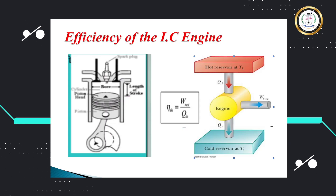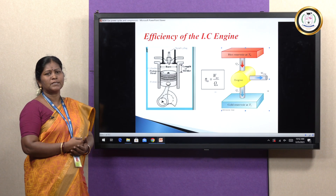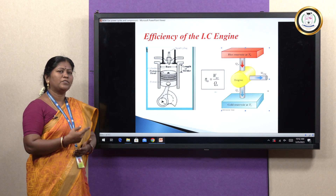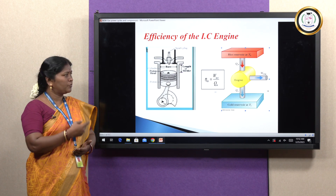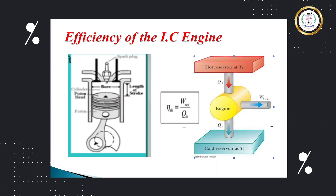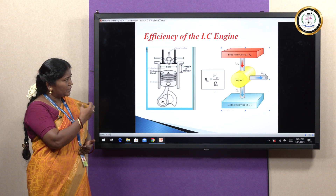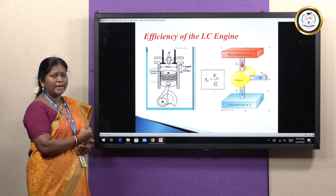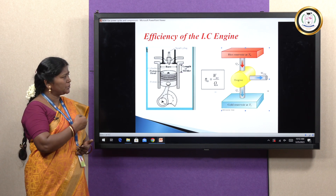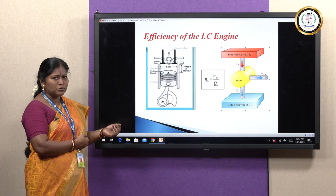It functions under the second law of thermodynamics. Based on the Kelvin-Planck statement, whenever the engine runs, it needs two different heat sources. The first one is a source having a higher temperature, and the other is a lower temperature level, which is called the sink or cold reservoir. The engine receives heat from the higher temperature source, some of it is converted to work output, and the rest goes to the sink.